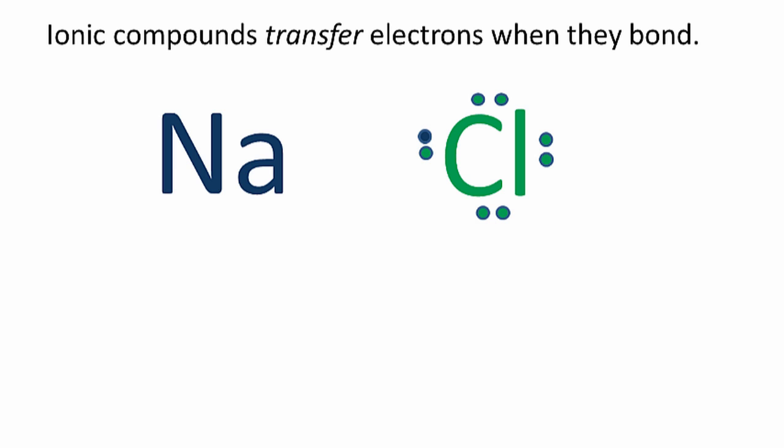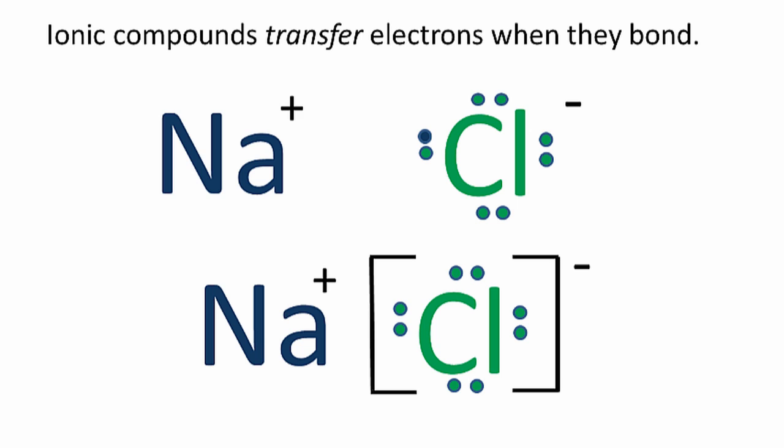The sodium lost an electron and electrons are negative, so when the sodium lost that negative, it became positive. The chlorine gained an electron, so now it has a negative charge. And that positive and negative will attract to form a chemical bond. And we'll draw it like this.